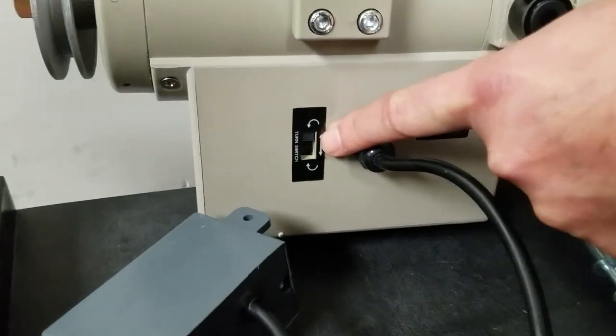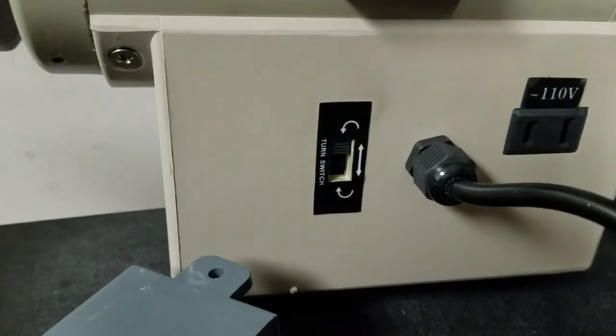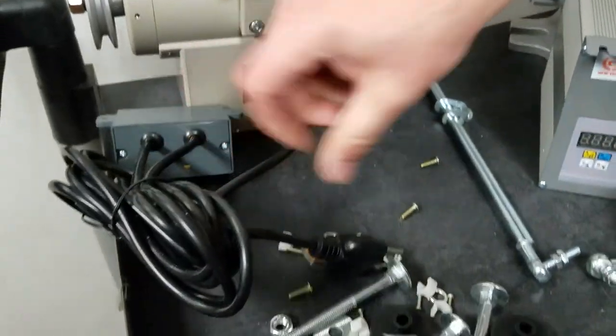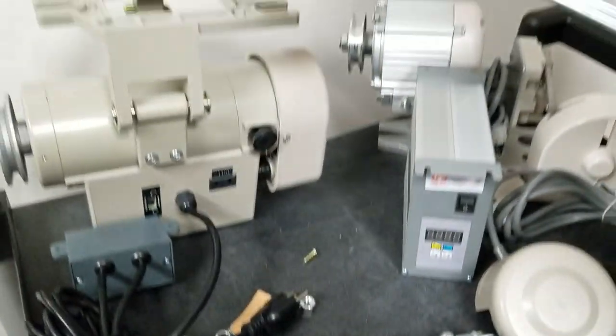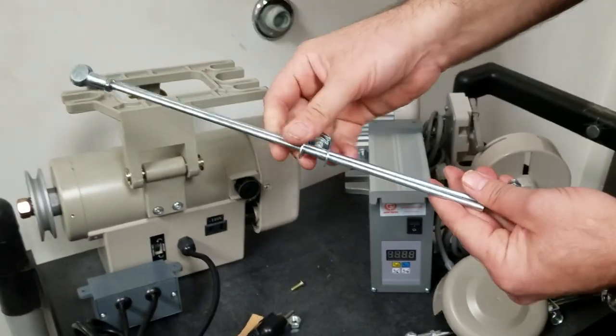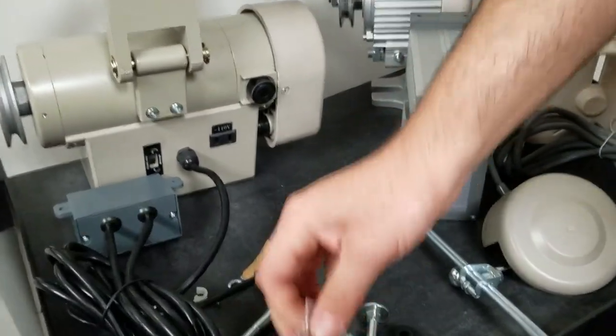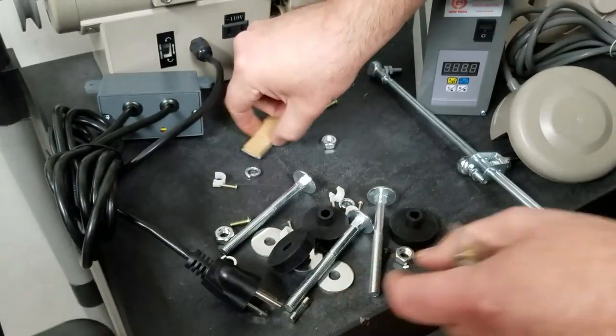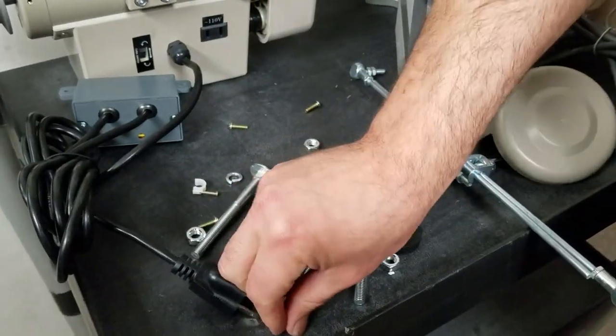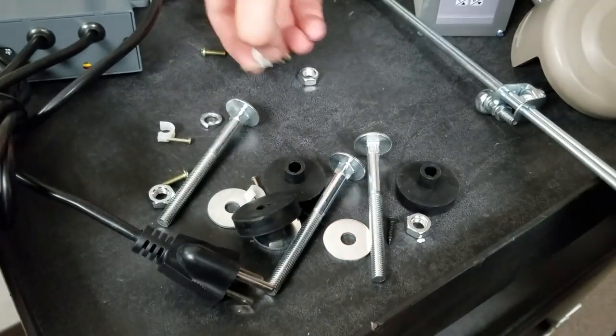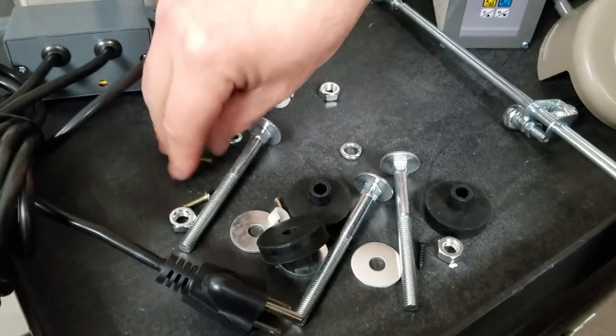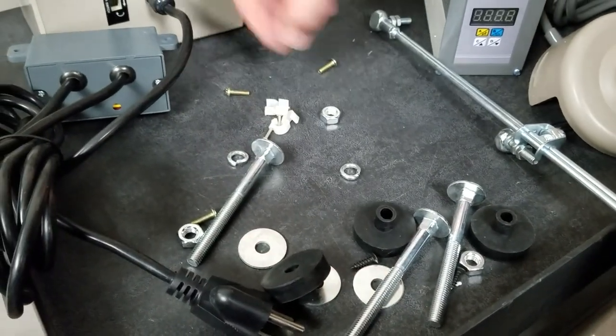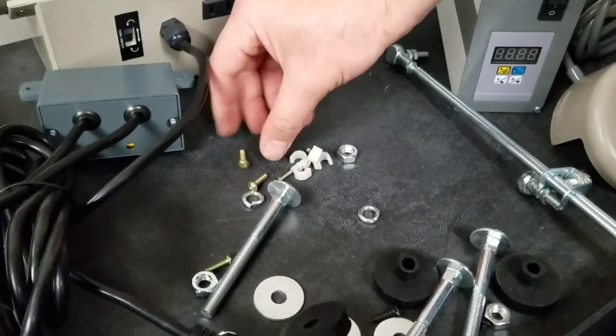Also you have the direction switch right there. The machine comes with the ball joint you see here. It comes with all the tools and accessories that you could put the machine together right here, everything.